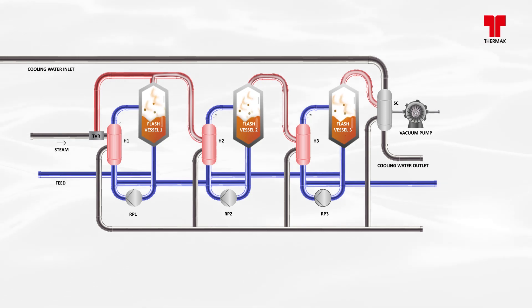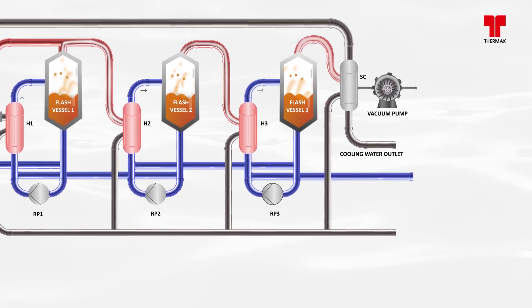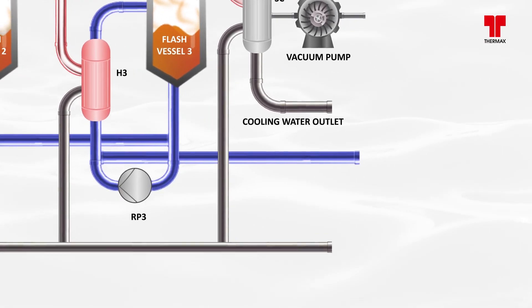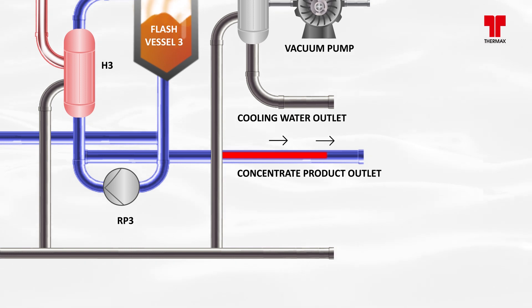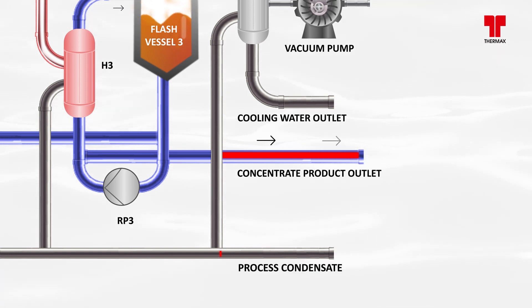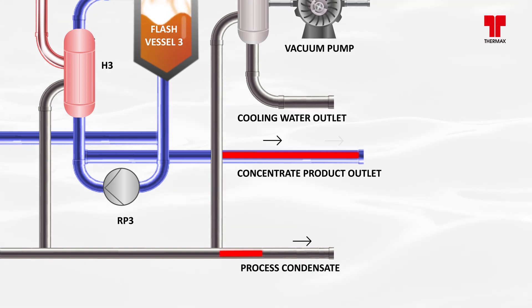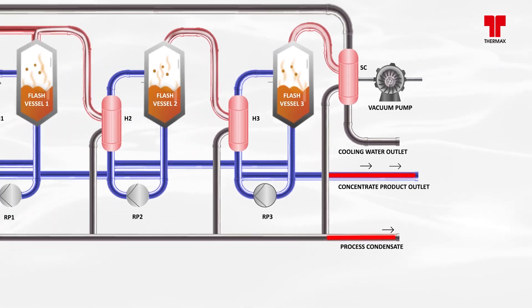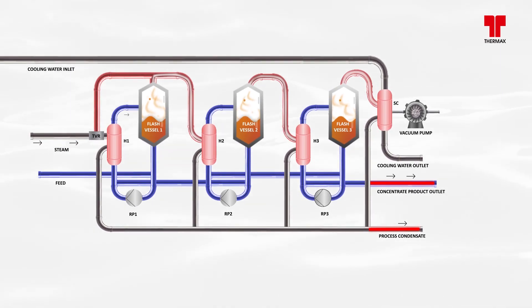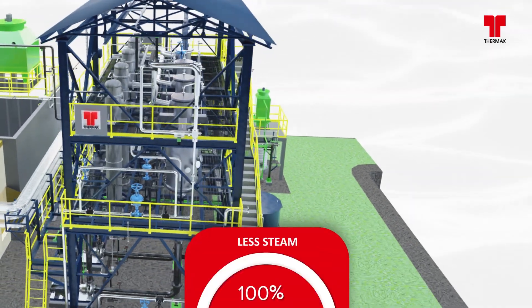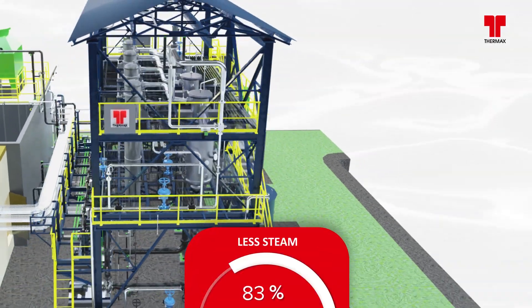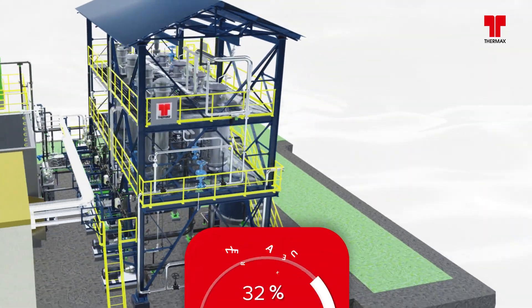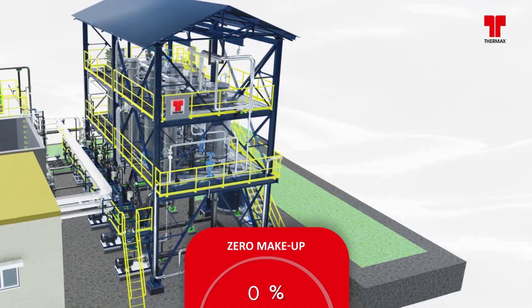This concentrated effluent then moves to the solid suppression unit where it gets converted into dry solids for disposal. The vapors are condensed to the purest form of clean water that gets collected sequentially. Our design is energy efficient and optimized, requiring up to 40% less steam and zero makeup water for the cooling tower.